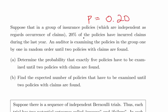It's a Bernoulli trial, a yes or no outcome for a particular trial. An auditor is examining the policies in the group one by one in random order until two policies with claims are found.